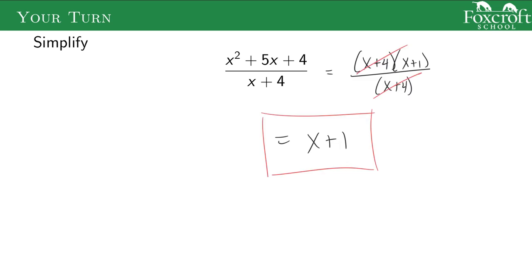Here's how you do it. On the top, we're looking for two numbers that multiply to give 4 and add to give 5 — that's going to be 4 and 1. So we factor the top as we would factor any quadratic. Now you see there's an x plus 4 on the top and an x plus 4 on the bottom; we can cancel those out, they go away. The only thing left over is x plus 1, which is technically x plus 1 over 1. When you divide by 1 it just goes away, so x plus 1 is the simplest final answer.